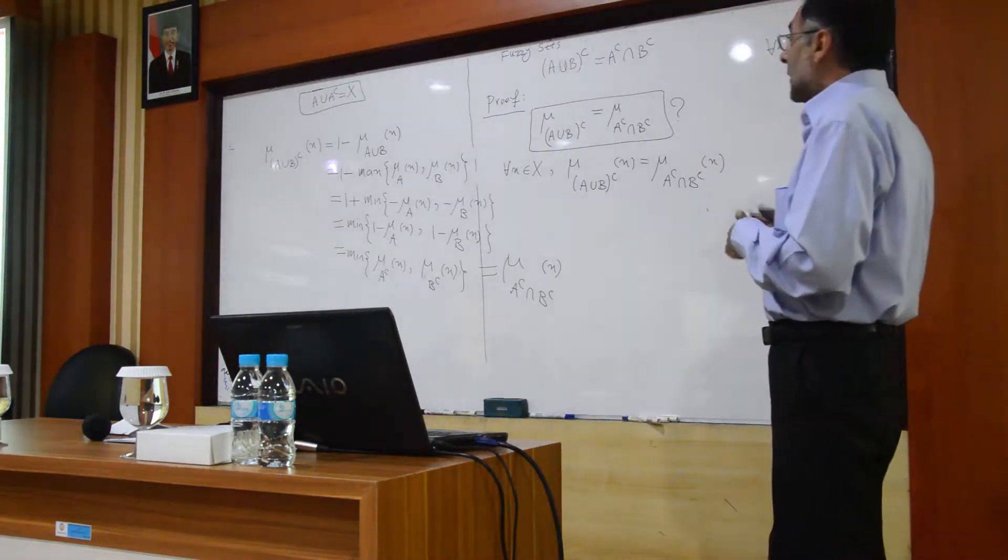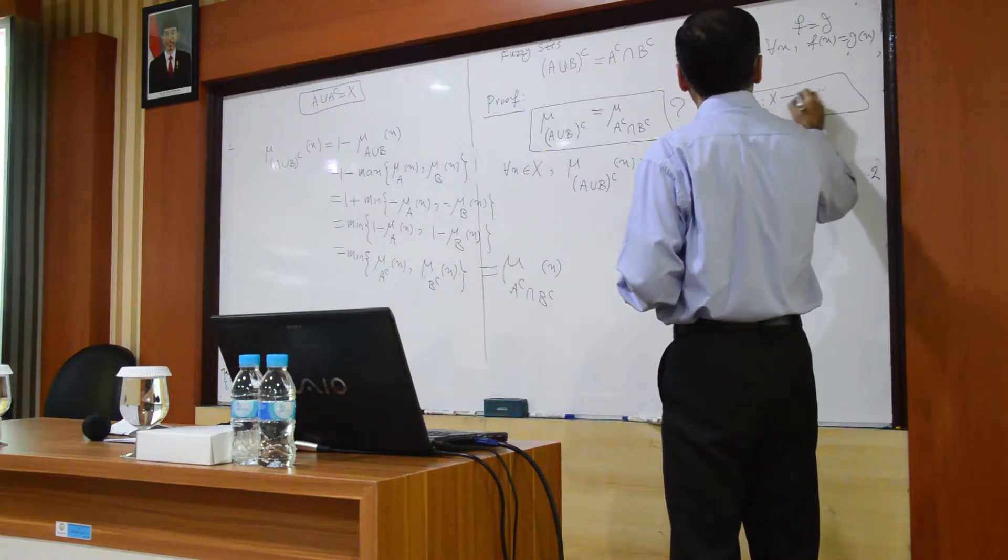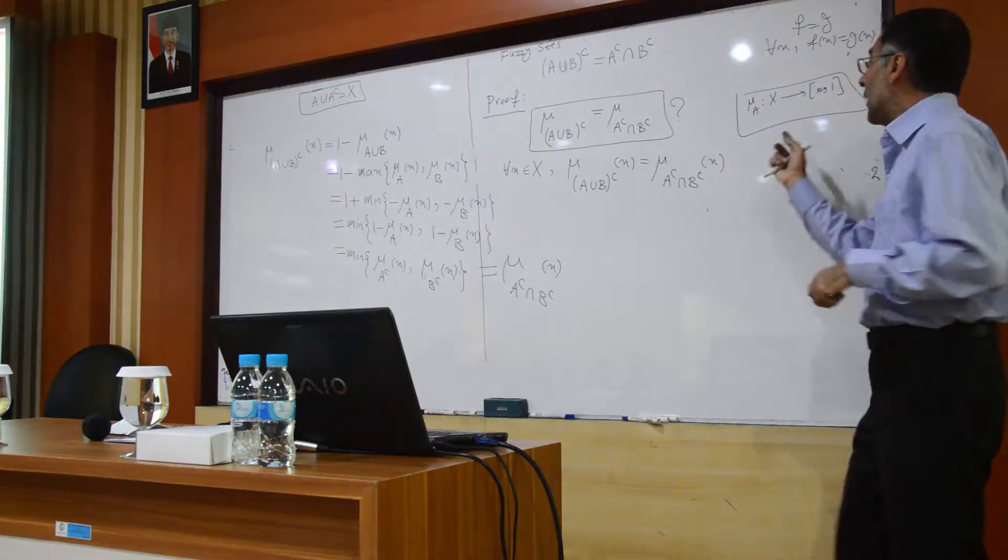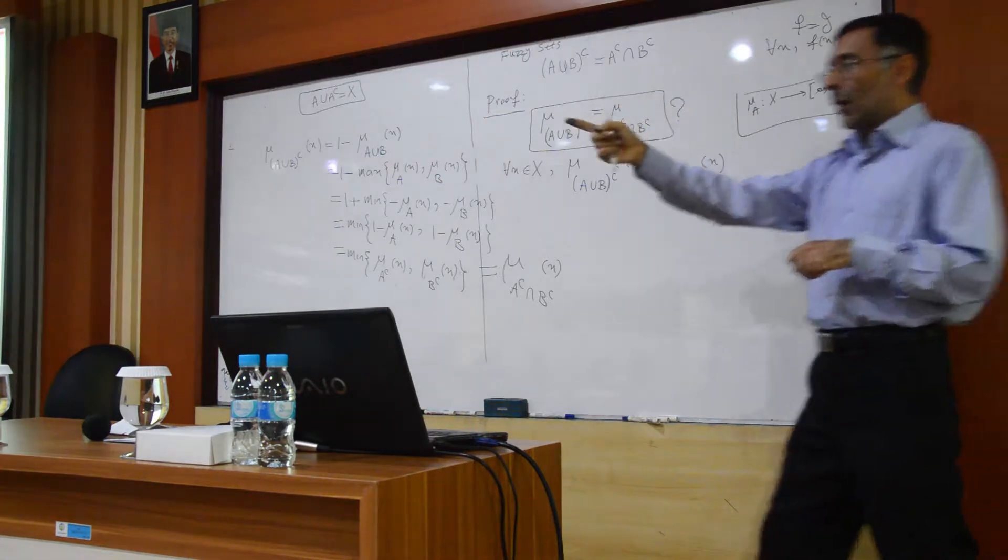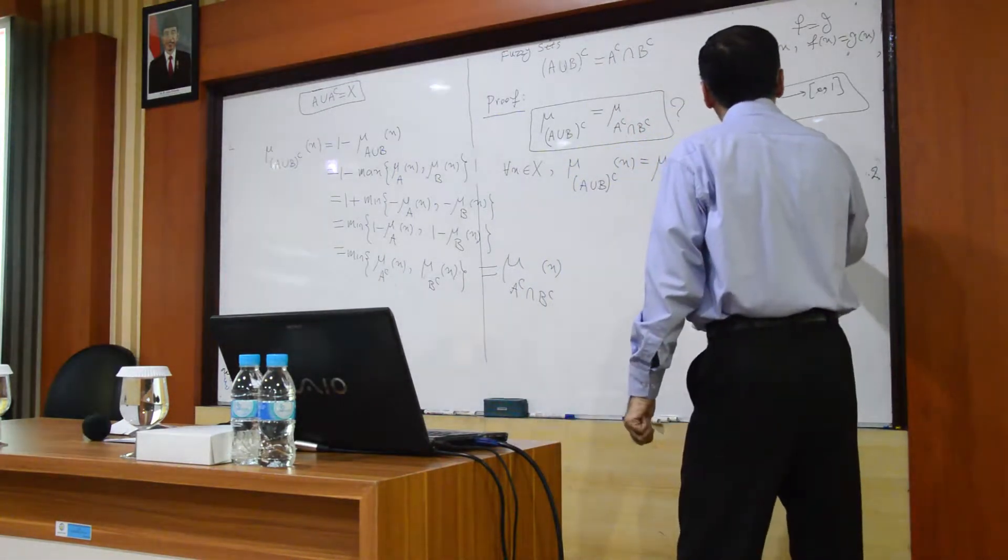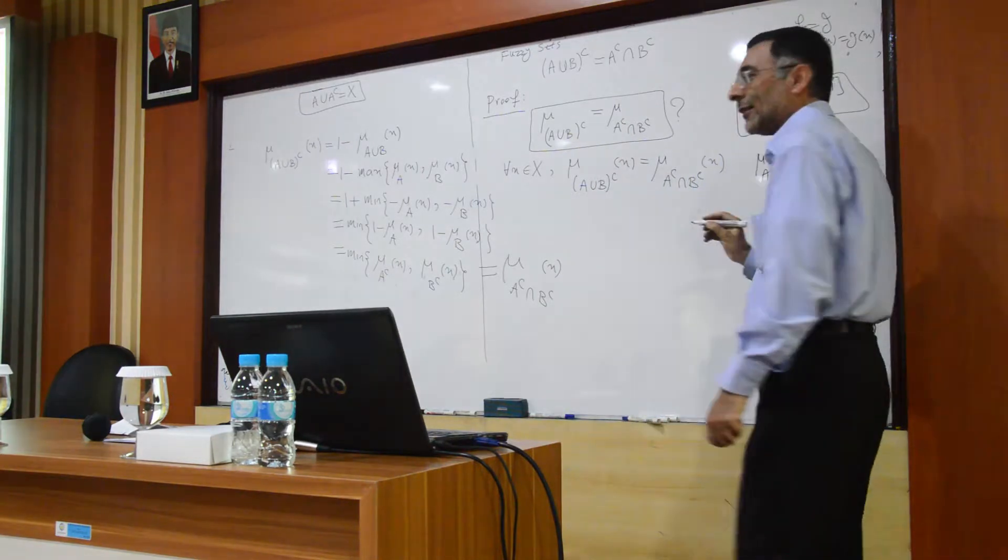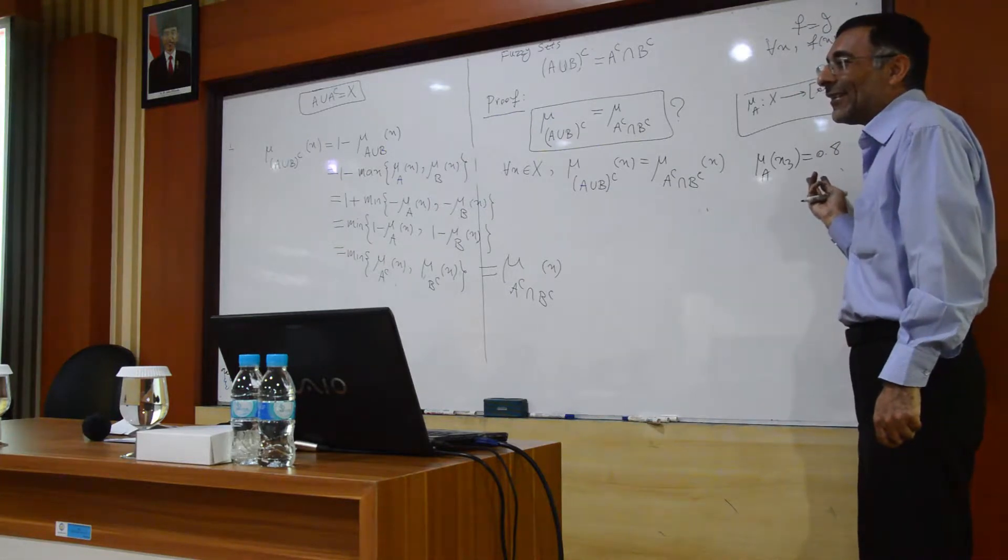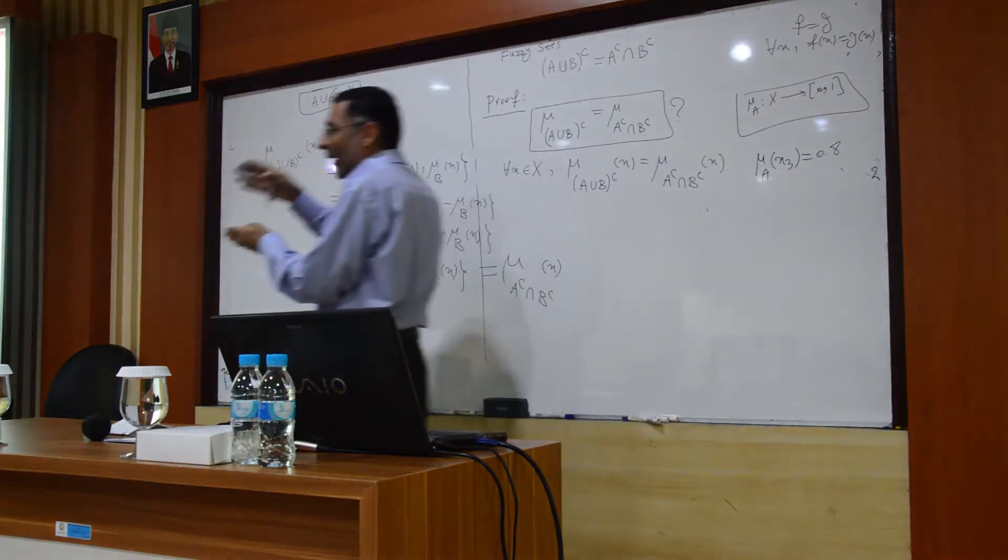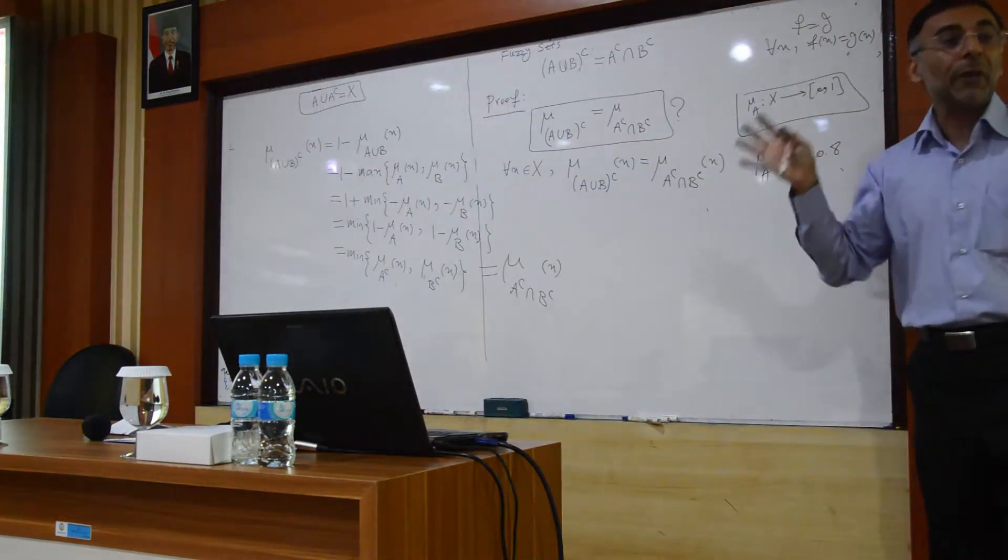But here, I mention one thing. When we say, this is a membership function, who determines this function? For example, for our example, we say mu A of x3, for example, this number. Who determines this number? Who determines you are more clever or less clever?